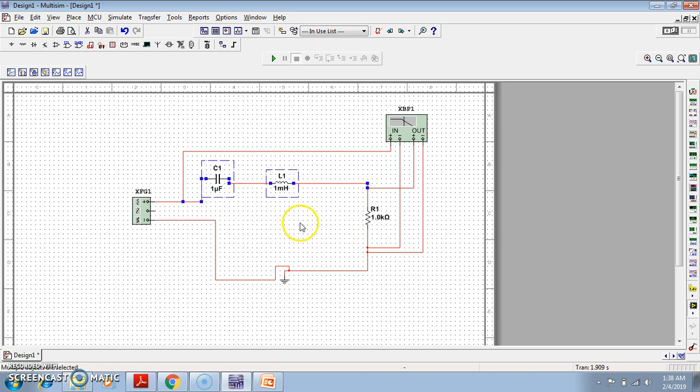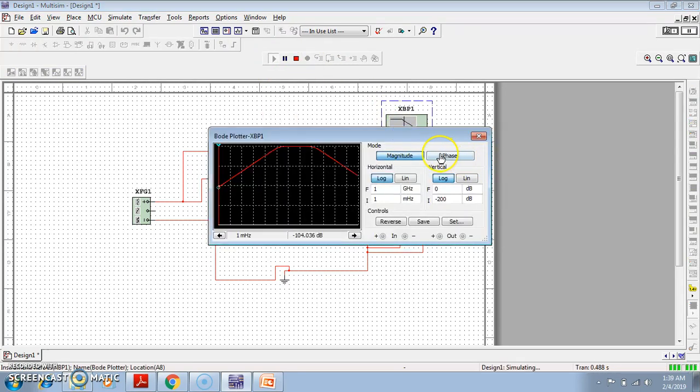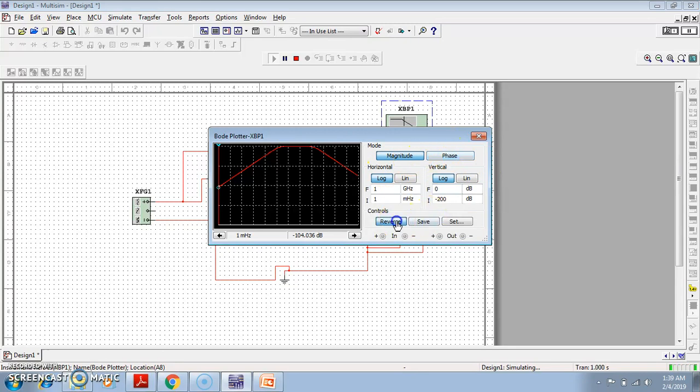This is basically our circuit. What waveform is selected? Sine waveform. The resonant frequency will be determined by this LC, because omega naught equals 1 by root over of LC, and the resistor is also there. So let us check first whether it is acting like a bandpass filter or not.